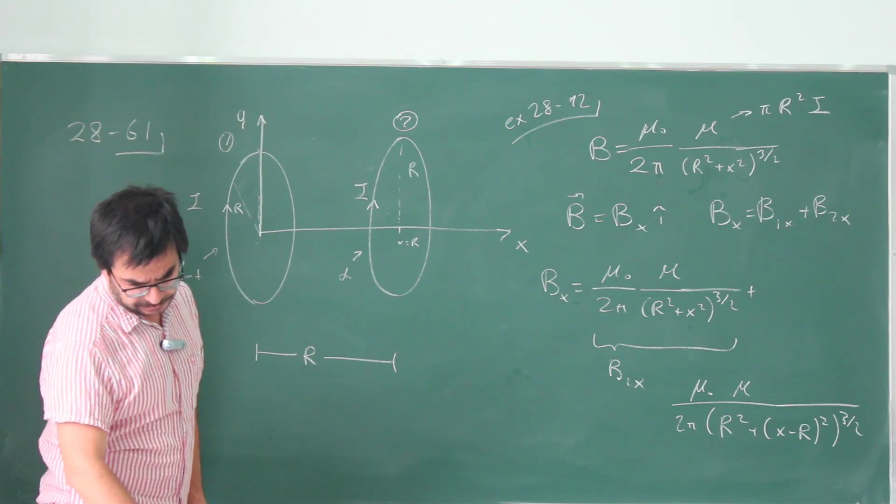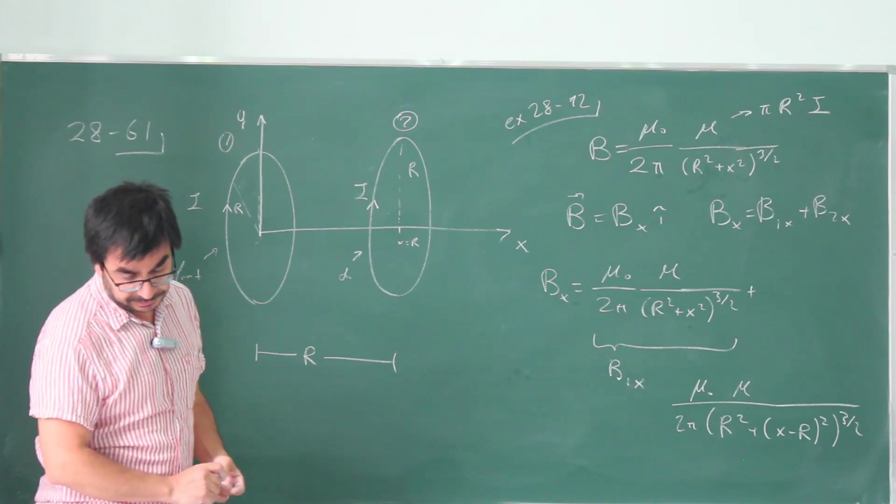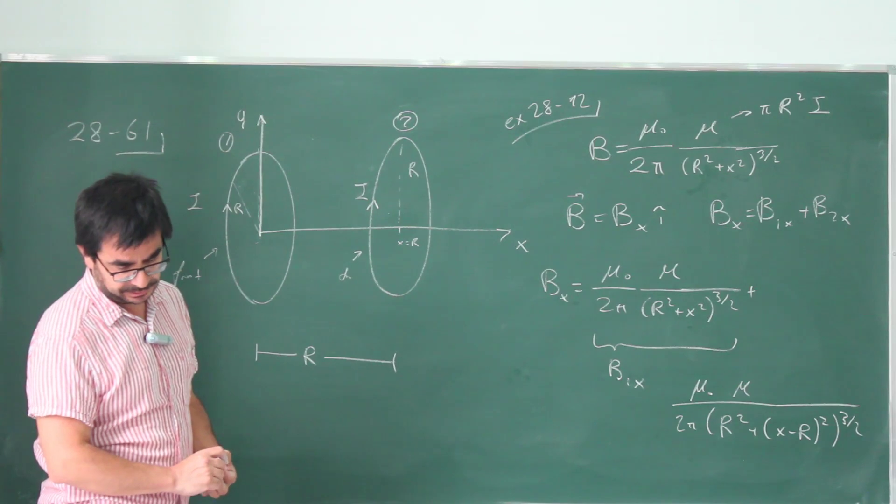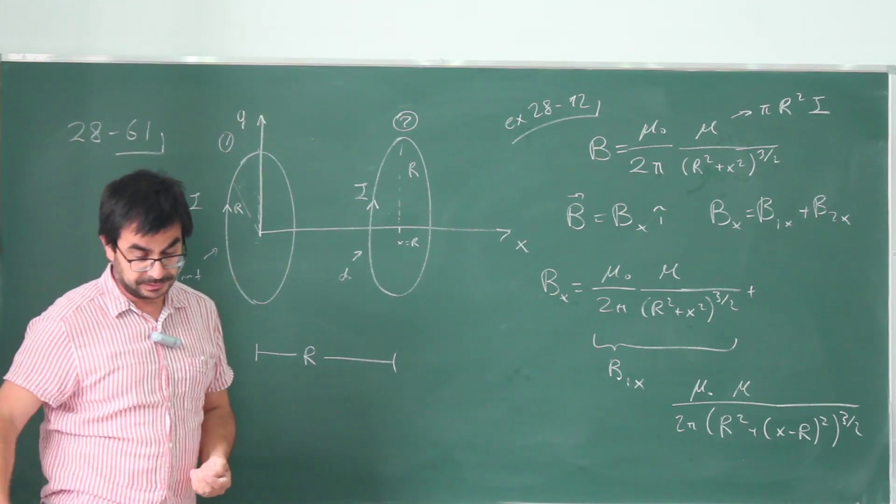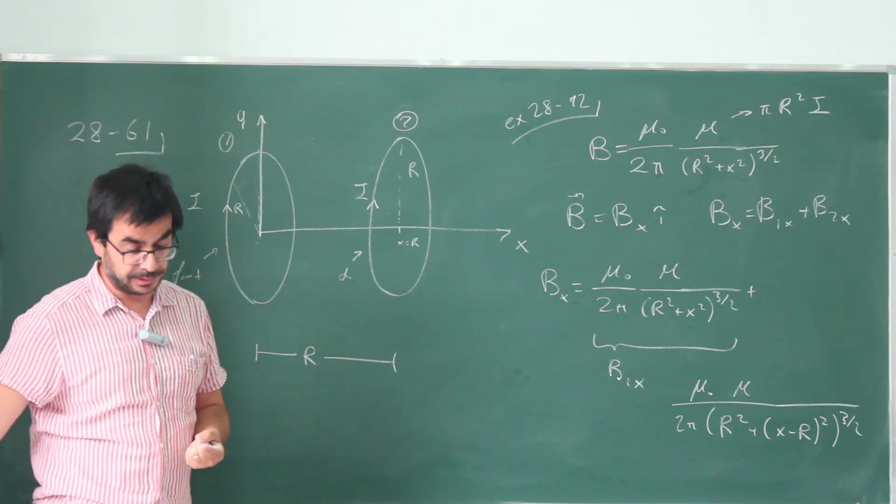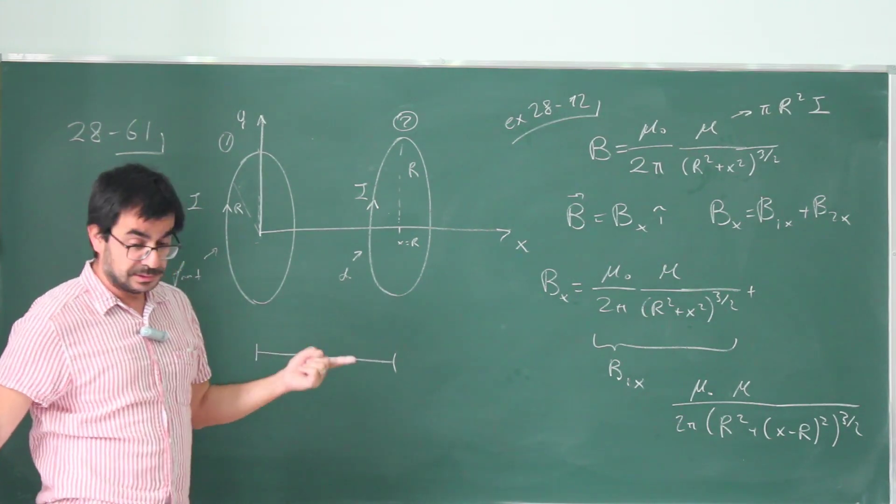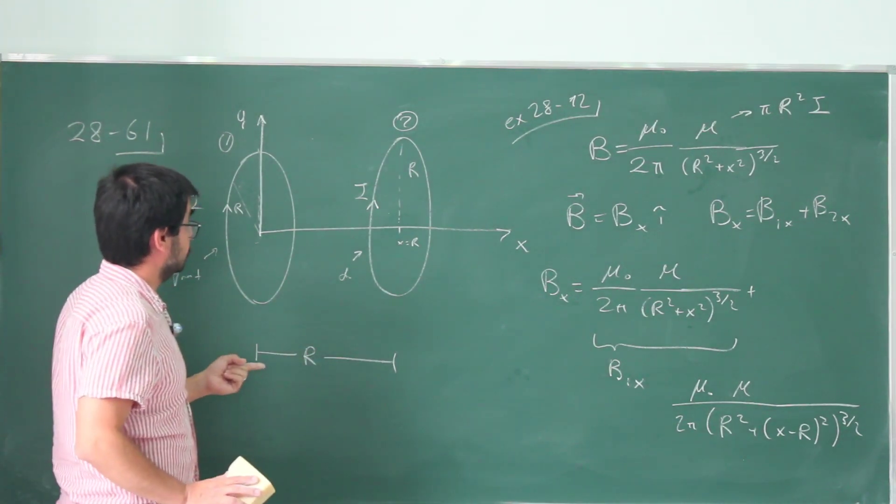Now, for part B, show that the field midway between the coils is particularly uniform, showing that dB by dx is 0, and d square B by dx square. So the first and second derivative of the magnetic field with respect to x coordinate is 0 at the midpoint between these two.